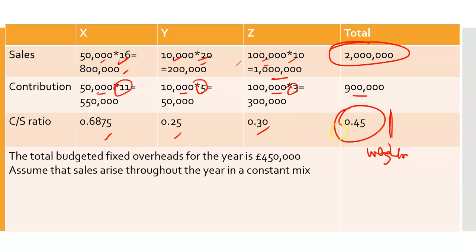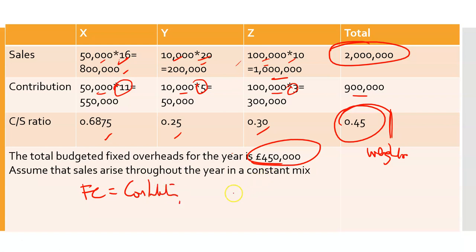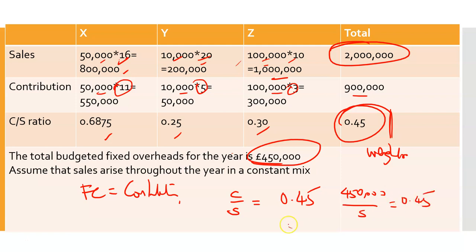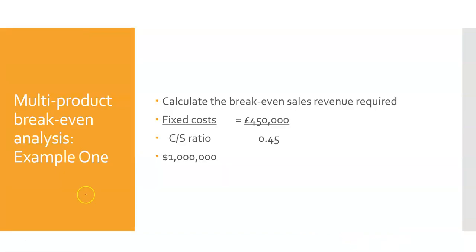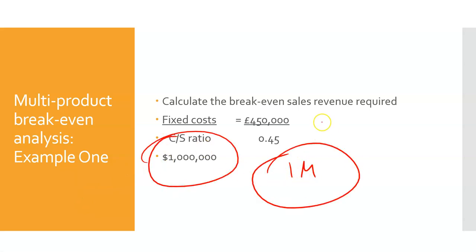So this is my C over S ratio. The ultimate aim is the business owner wants to know how much revenue do I need to breakeven, because he's selling a range of products. Now that he has this average C over S ratio of 0.45, he can say: at breakeven, fixed costs equal contribution, so 450,000 over S equals 0.45. Therefore S equals 450,000 divided by 0.45, and I get £1 million pounds as my breakeven revenue.